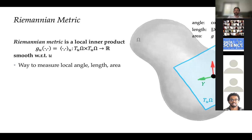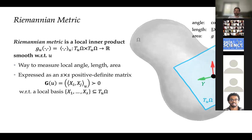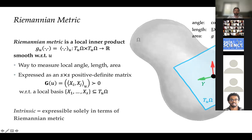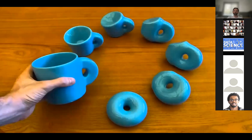The Riemannian metric gives us a way to measure locally angles, length, and area. If we attach a local frame to the tangent space we can express the Riemannian metric as an s×s positive definite matrix. Properties expressible entirely in terms of the Riemannian metric are called intrinsic — a recurring term today. We are interested in intrinsic properties because if we deform the manifold without changing the metric, we preserve many interesting properties useful for deep learning. Transformations that do not preserve the metric are not isometries and are too free.